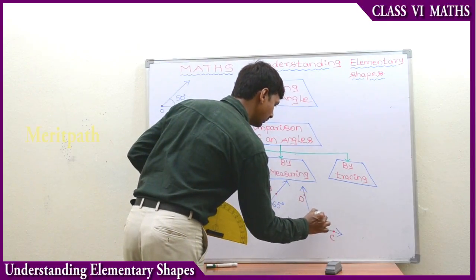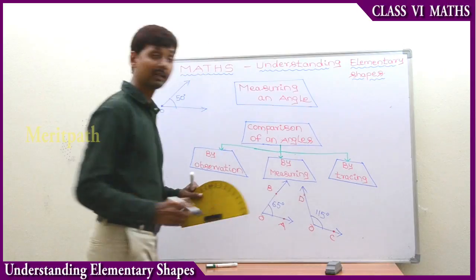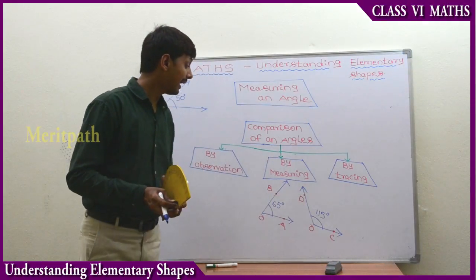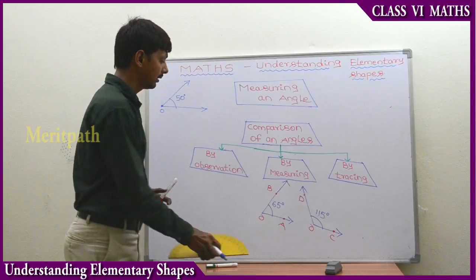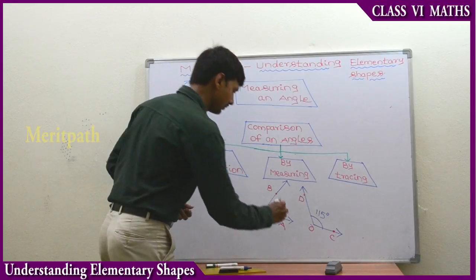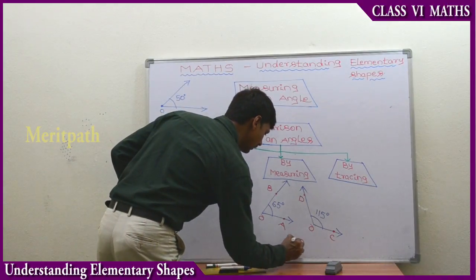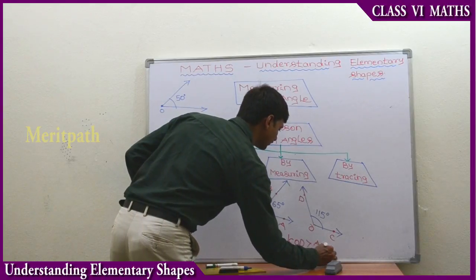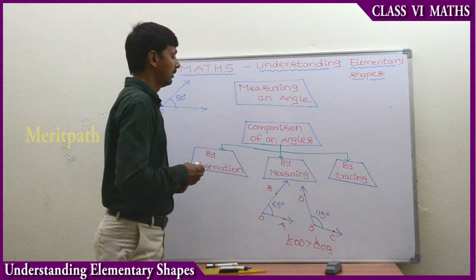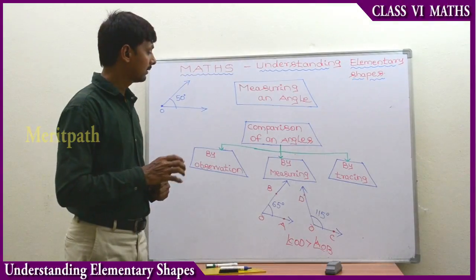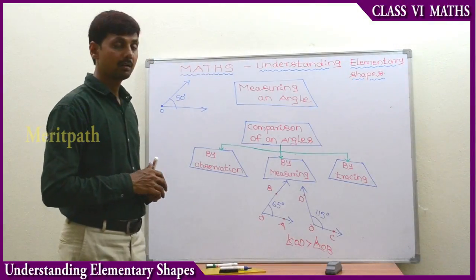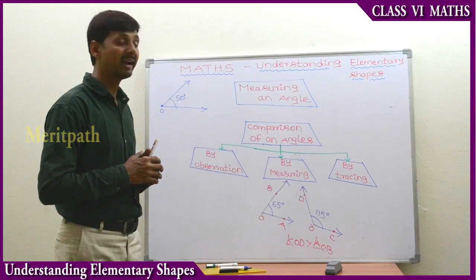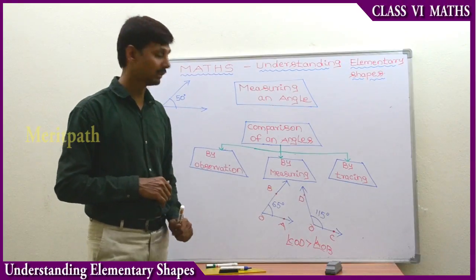So by measuring these two angles, we can say that angle COD is greater than angle AOB. This is the comparison of angles by measuring using a protractor.